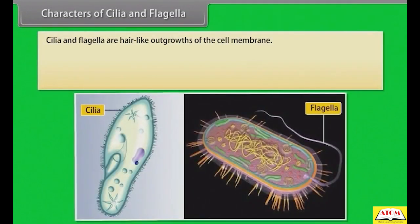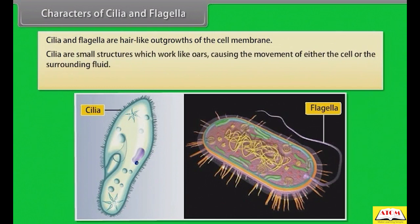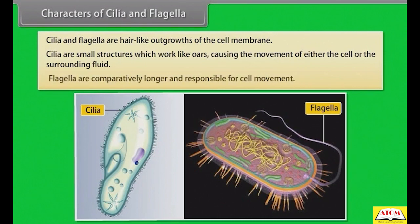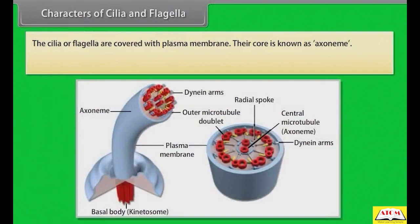Cilia and flagella are hair-like outgrowths of the cell membrane. Cilia are small structures which work like oars, causing the movement of either the cell or the surrounding fluid. Flagella are comparatively longer and responsible for cell movement. The cilia or flagella are covered with plasma membrane.